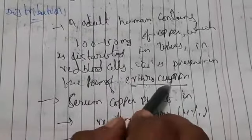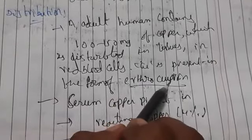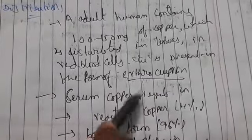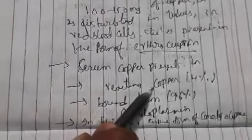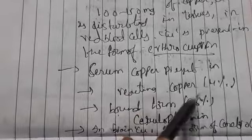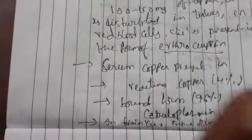Copper is present in red blood cells in the form of erythrocuprine, which is a colorless protein. Serum copper is mainly present in two forms: reacting copper at 4%, which reacts with diethyldithiocarbamate, and bound form at 96%, represented by ceruloplasmin, which is an alpha globulin containing 8 atoms of copper per molecule. In the brain, copper is present in the form of cerebrocuprine.